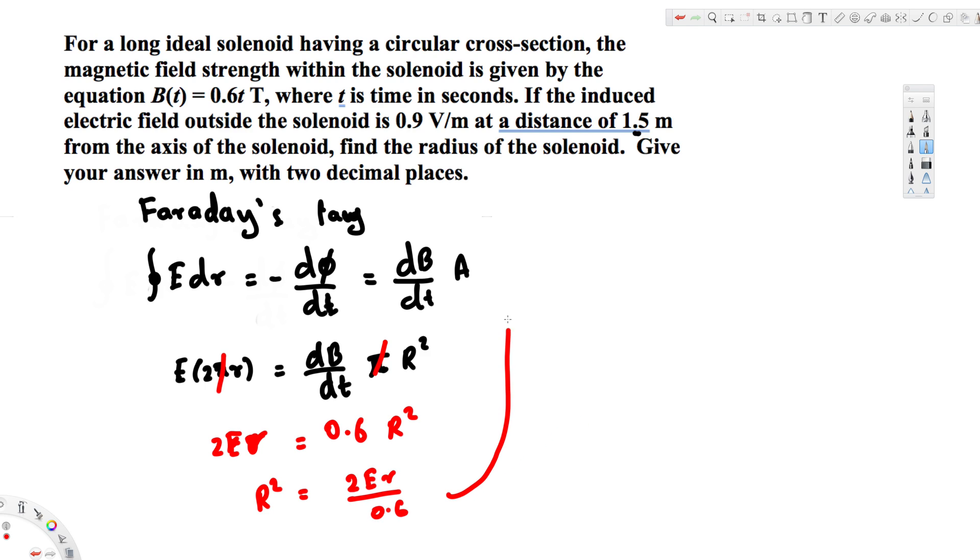Now let's continue this one here. R is going to be equal to the square root of 2Er divided by 0.6, and we know the electric field, that is 0.9. 2 times 0.9 times the distance, that is 1.5,